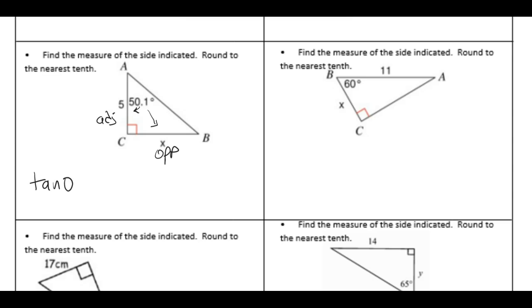Tangent of 50.1 degrees equals opposite x over adjacent 5. If we multiply both sides by 5 we get x equals 5 tangent 50.1 degrees.